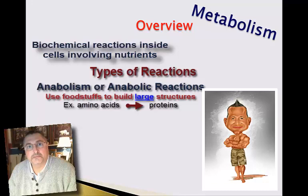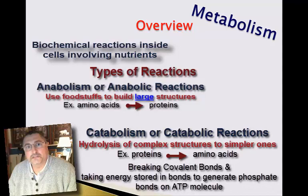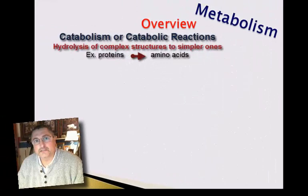The other set of reactions is called the catabolic reactions, or catabolism. Catabolism is the set of reactions in which we take the same foodstuffs and break them down, and in the process of breaking those covalent bonds that hold those organic molecules together, we garner the energy stored in those covalent bonds and transfer it to the phosphate bonds associated with building ATP molecules. Catabolism occurs at the cell level, and these catabolic reactions are known as cellular respiration.